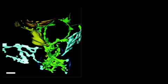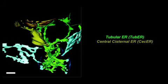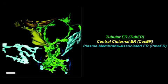The researchers' initial studies identified three different types of peripheral ER domains: tubular ER, central cisternal ER, and plasma membrane-associated ER. The latter of these domains was much more complicated than Volz and colleagues had anticipated.